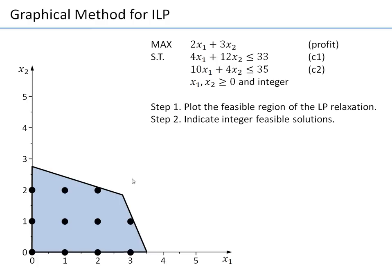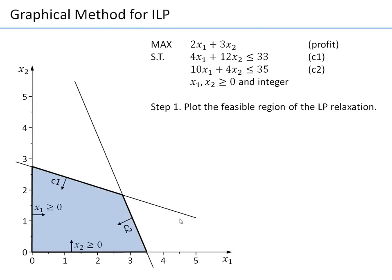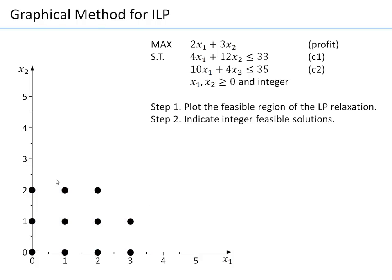The feasible region for the integer problem consists only of dots at points where both X1 and X2 are whole numbers. In this example, we have just 11 integer feasible points. The situation changes dramatically: before we had a continuous region, but with the integer constraint it is restricted to a finite number of discrete points.